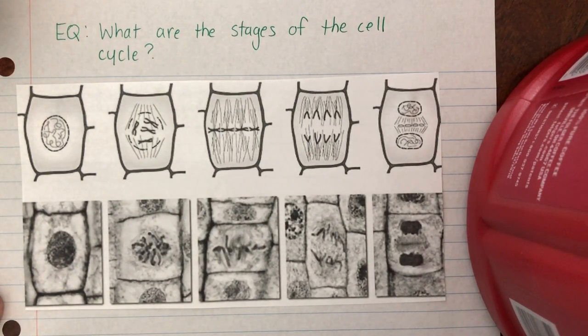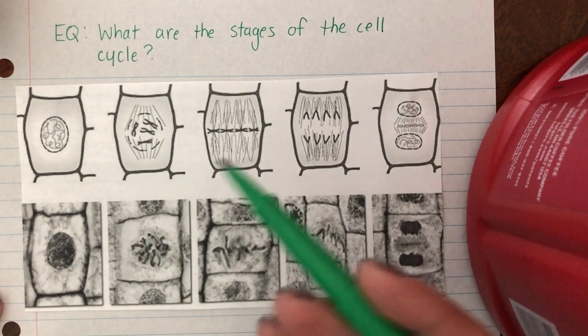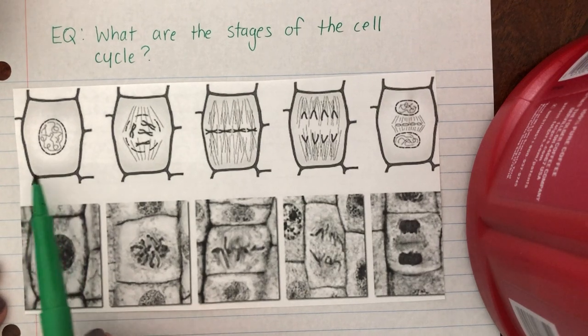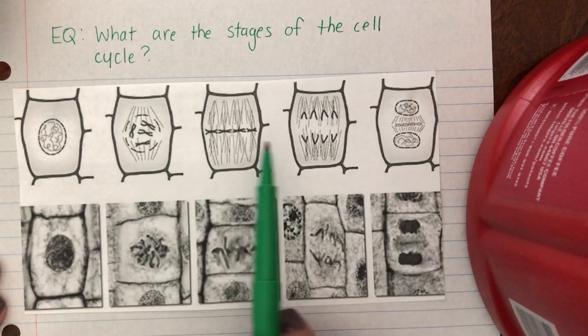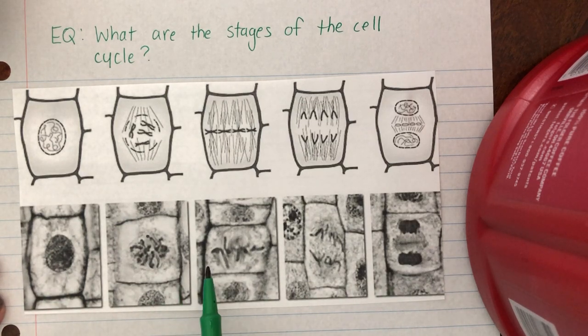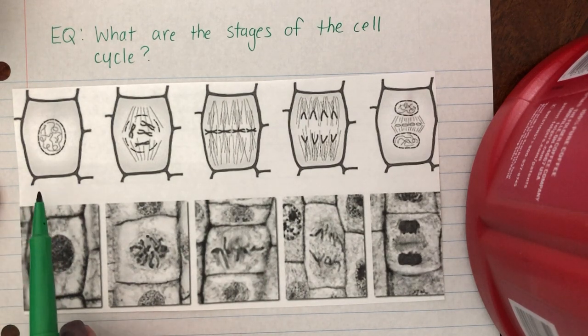One of the things that you need to be able to identify when studying the cell cycle or the stages of the cell cycle is you need to be able to identify them from diagrams like this. The top row is diagrams and this bottom row is actual images from microscopes showing the different stages.